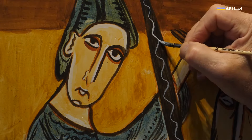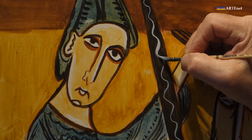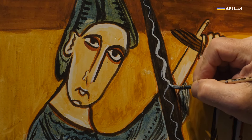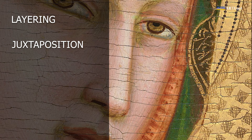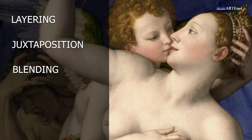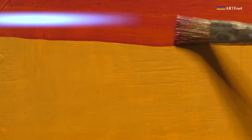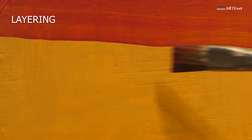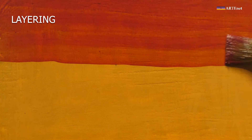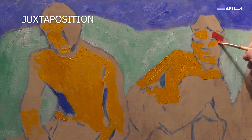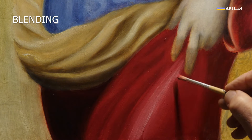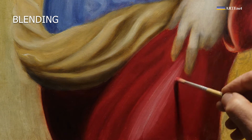In painting, the techniques of application basically boil down to the following: layering, juxtaposition, blending. When we paint we can apply colours one on top of the other, or side by side, or otherwise we can merge them — that is, mixing them together.